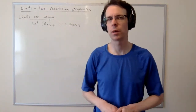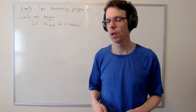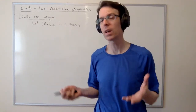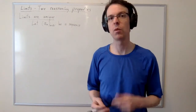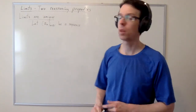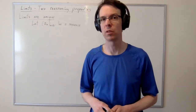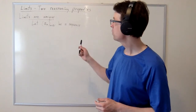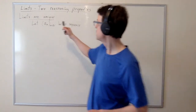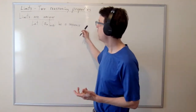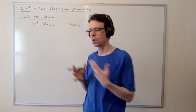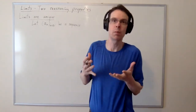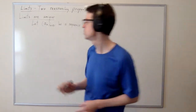In this video we're going to prove two simple, reassuring properties about the way limits behave. These properties are so ordinary and so intuitive that you might not think we need to prove them, but we do. The first property is the uniqueness property of limits. We're going to prove that if we have a sequence a_n and it converges, then it only converges to one thing — you can't have a sequence that converges to five but also converges to six.